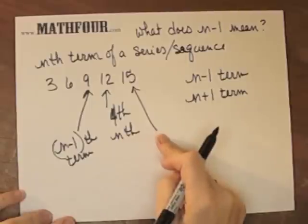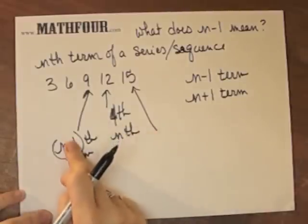So this would be the 76th term, which would be n plus 1, and the n minus 1 would be the 74th term.